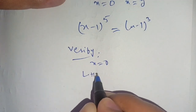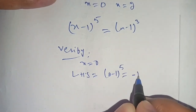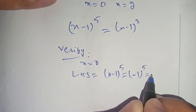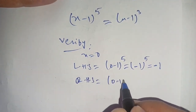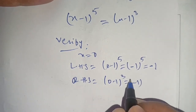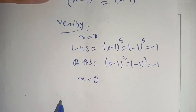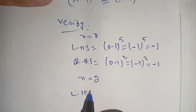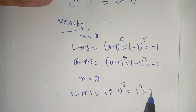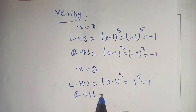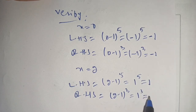For x = 0: the left hand side becomes (0 - 1)^5 = (-1)^5 = -1, and the right hand side becomes (0 - 1)^3 = (-1)^3 = -1. For x = 2: the left hand side becomes (2 - 1)^5 = 1^5 = 1, and the right hand side becomes (2 - 1)^3 = 1^3 = 1.